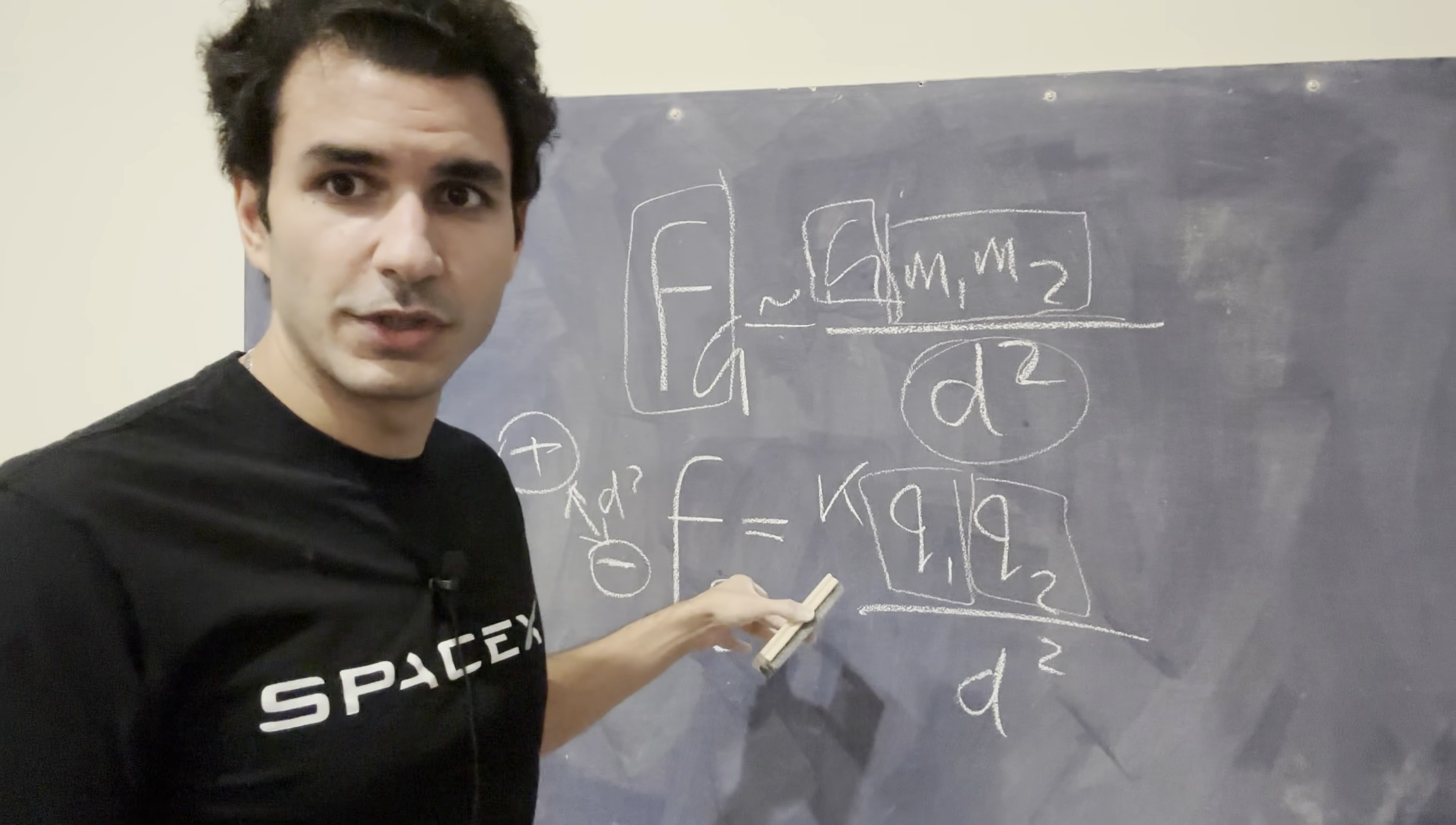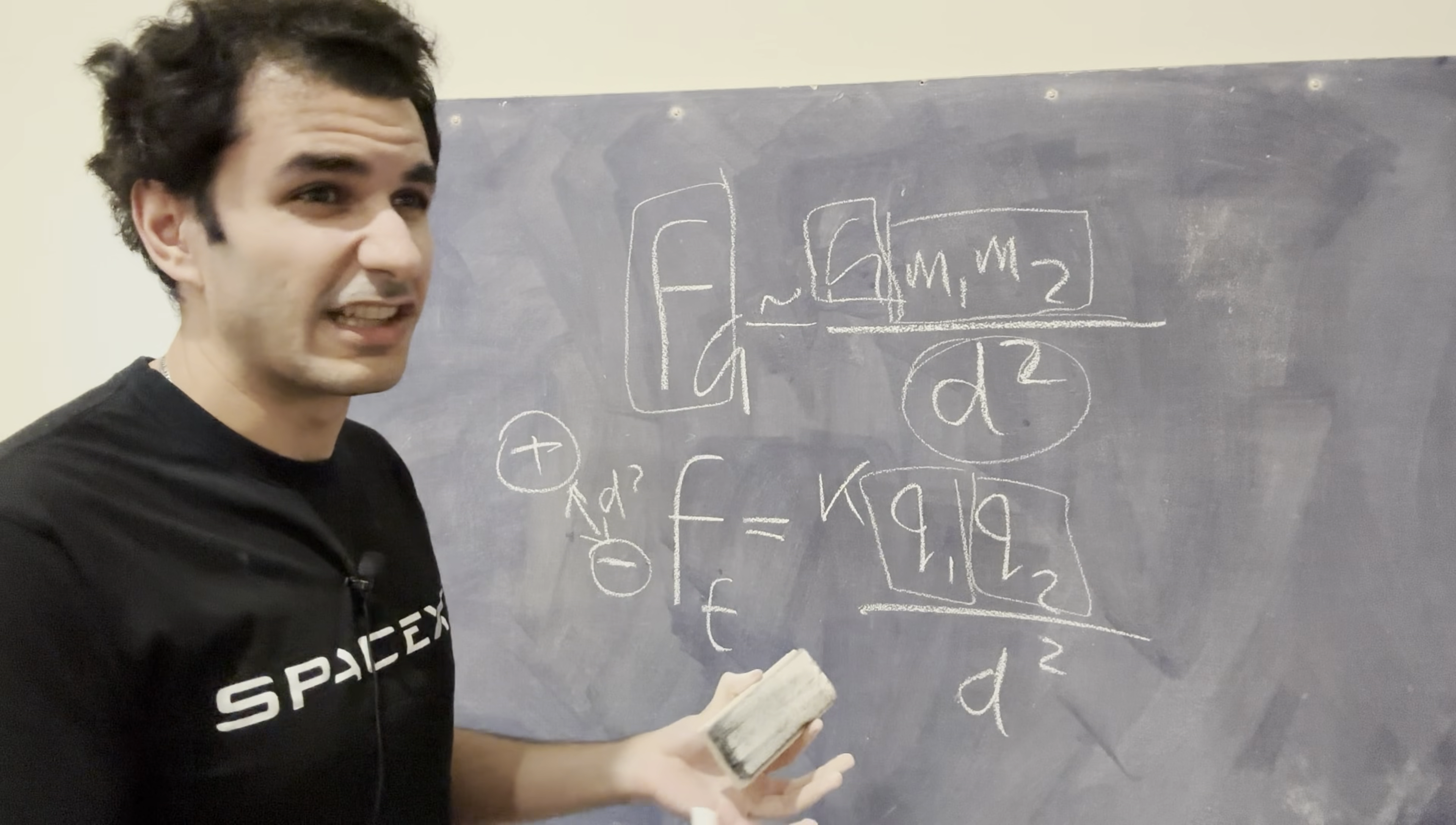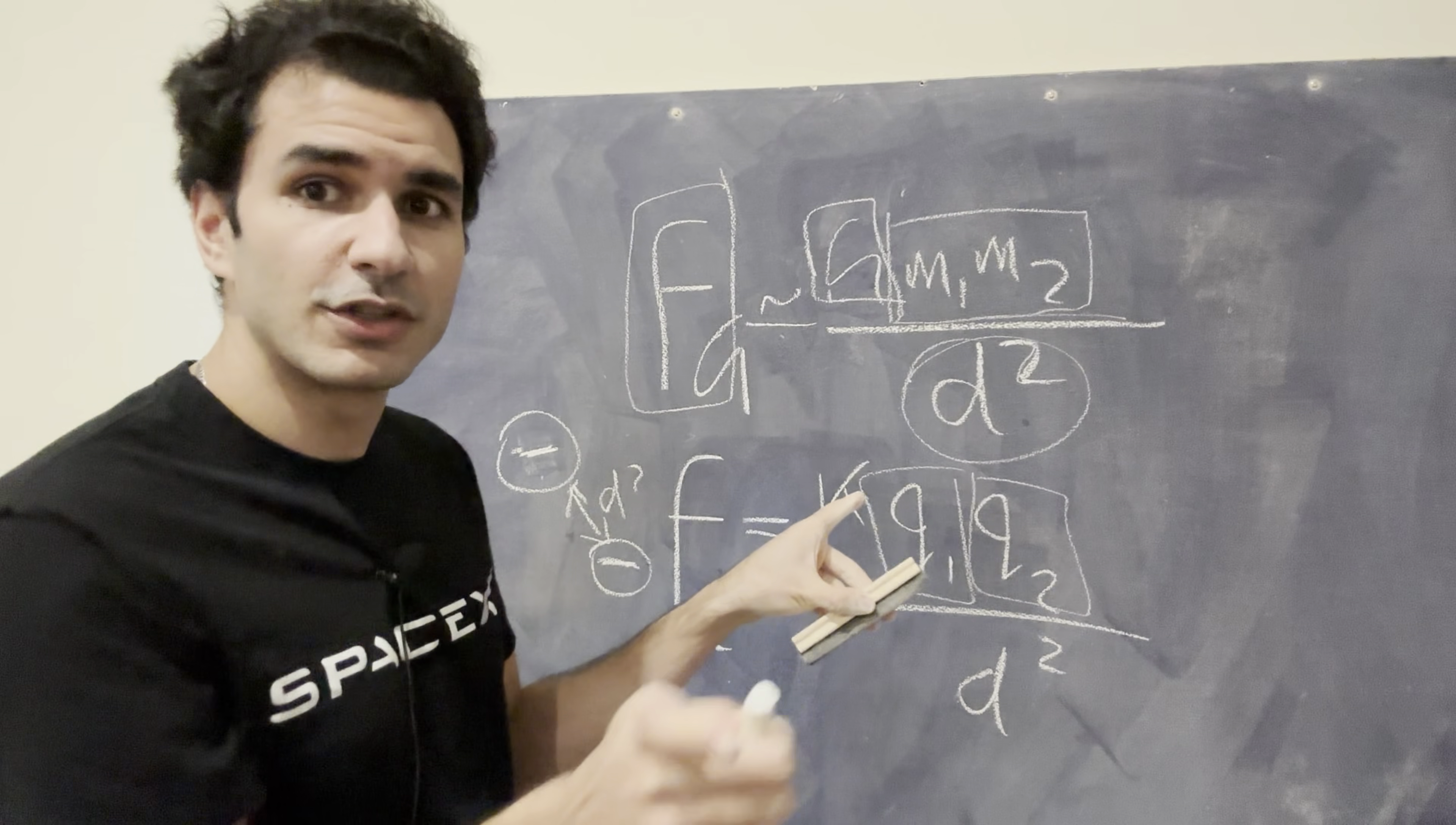But something magical starts happening with this equation relative to the previous one, where here, the forces can only be attracted to each other. In mass, at least based on our current understanding, things only pull each other towards each other. And in the case of electrostatics, or in this case Coulomb, this is called Coulomb's law, or just the electric force law, if these guys are opposite charges, they attract. But if they're the exact same charge, then they experience the exact same force, the exact same magnitude. So the math still checks out, but it's going to be in the opposite direction.